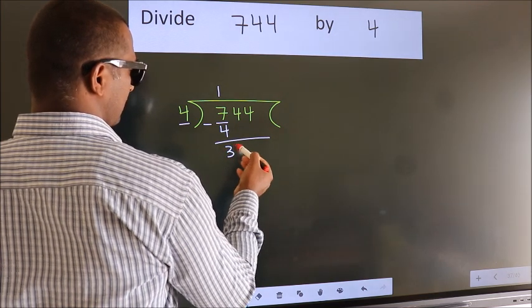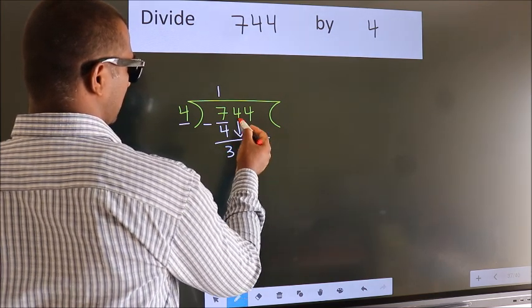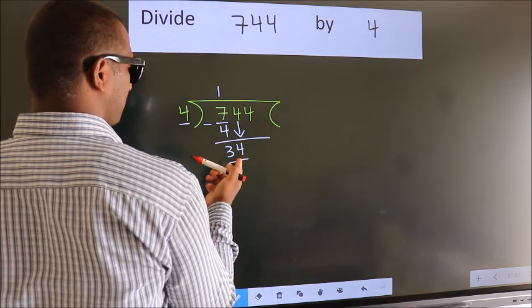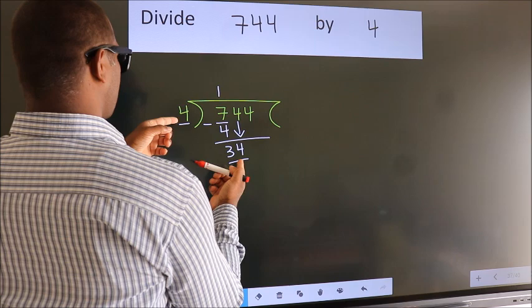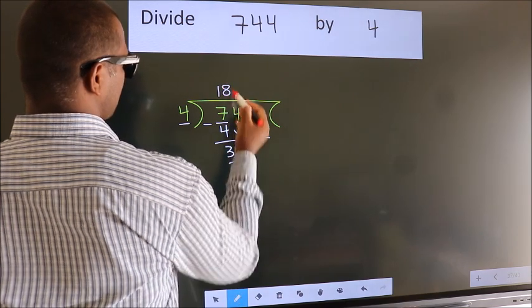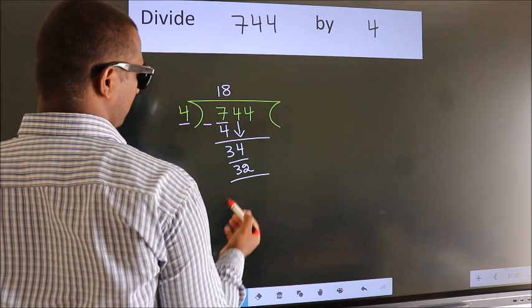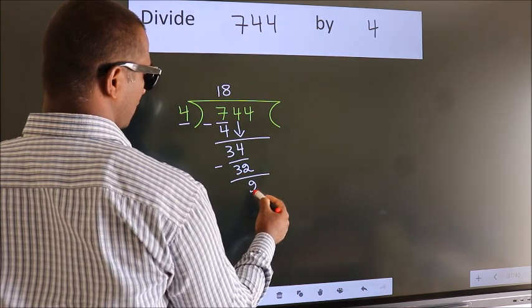After this, bring down the beside number. So 4 down. So 34. A number close to 34 in 4 table is 4 8 32. Now we subtract. We get 2.